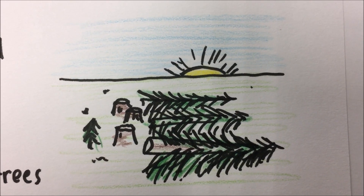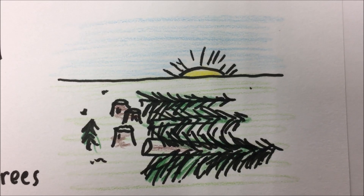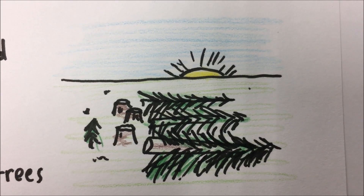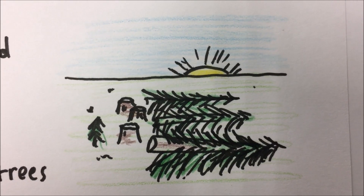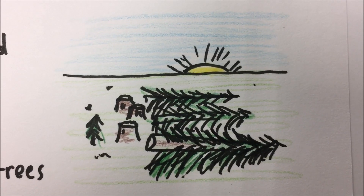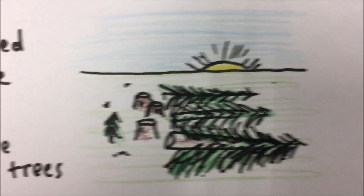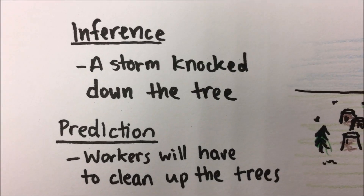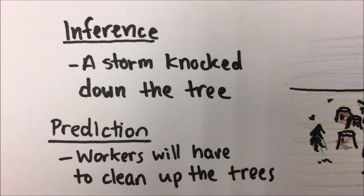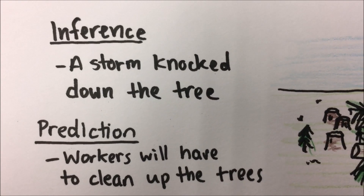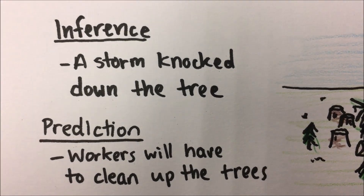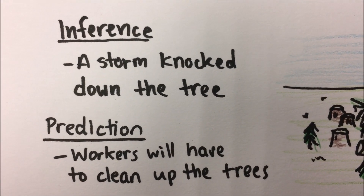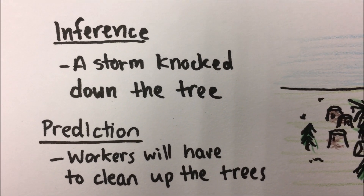We can also make a prediction. In that case we're using our observations and our inferences to decide what will happen. In this case we predict that the workers will have to clean up the trees — they might bring their chainsaws, there might be a lot of noise — and that would be a prediction of what will happen.